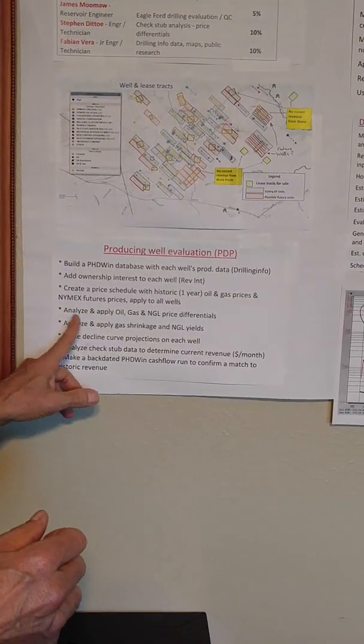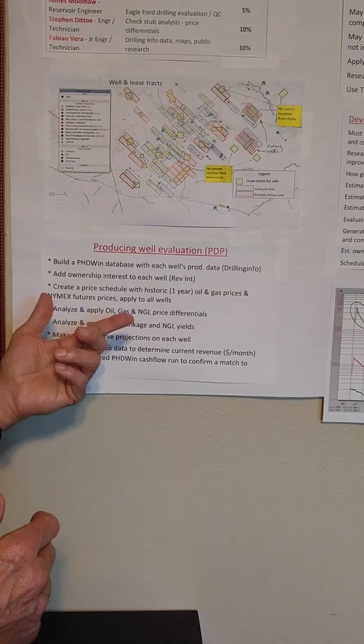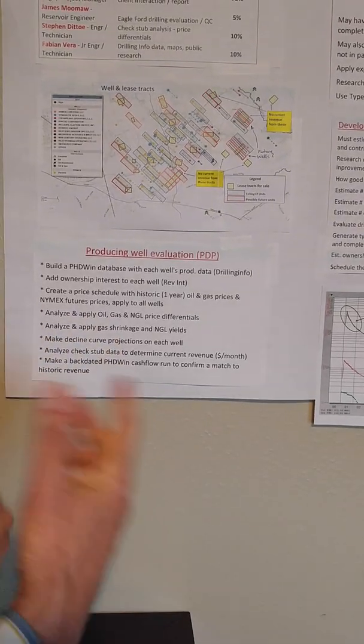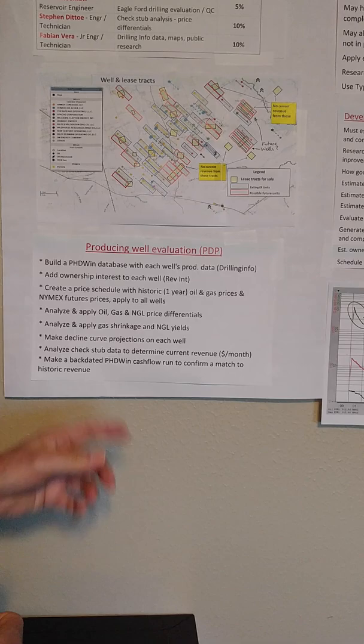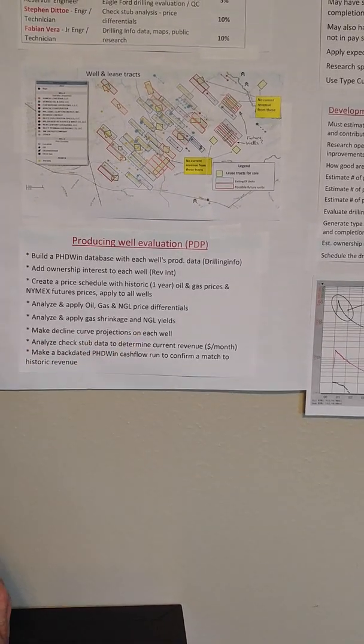We have to analyze the check stubs and get the price differentials for oil and gas and the gas shrinkage and NGLs. We apply all that to all the wells, and then we have to do a decline curve projection on each well.